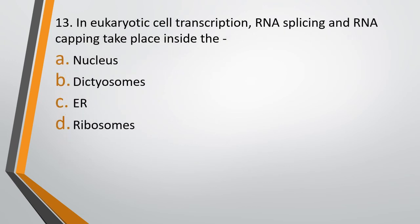Question number 13. In a eukaryotic cell, transcription, RNA splicing, and RNA capping takes place inside: the nucleus, dictyosome, endoplasmic reticulum, or ribosomes. The correct answer is Option A — nucleus.